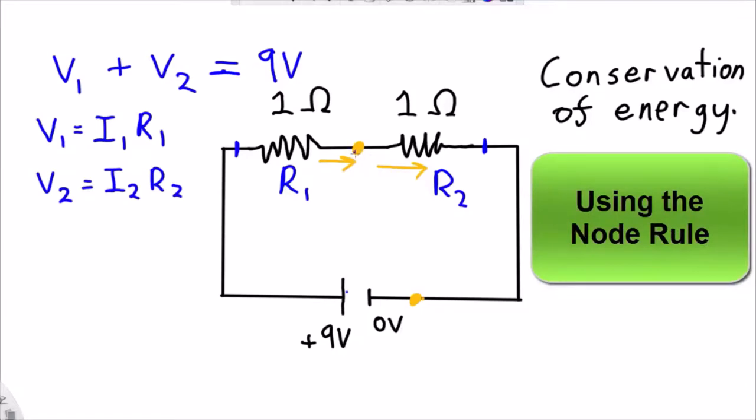using conservation of charge, or the node rule, I know that the current going across resistor 1 must be equal to the current going across resistor 2, so I1 equals I2.